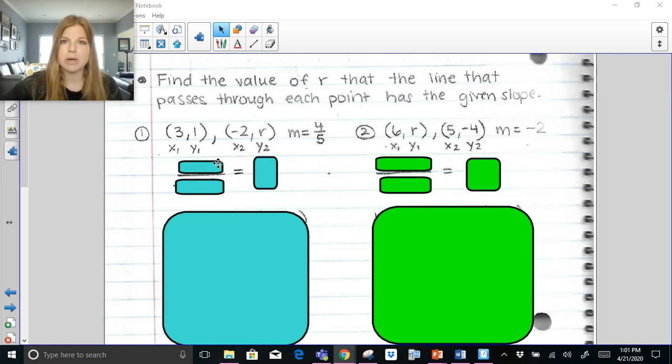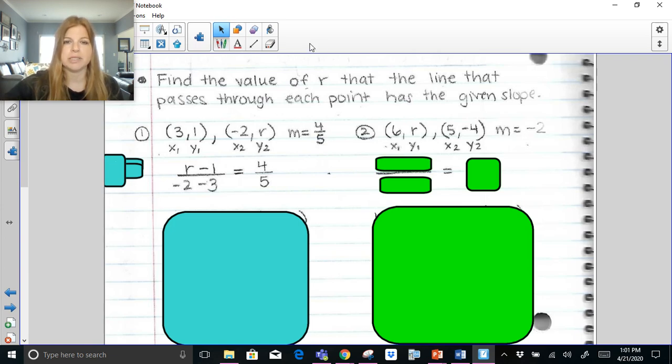So basically we know the slope formula. It's y sub 2 minus y sub 1, let's plug those values in, so r minus 1, over x sub 2 minus x sub 1, negative 2 minus 3. And I know when I plug these two ordered pairs into my slope formula it needs to equal 4/5. Now think about what we really have here. We have a ratio equal to a ratio. Better name for that is a proportion and we know how to solve proportions. One of the methods of solving a proportion is to do cross products.